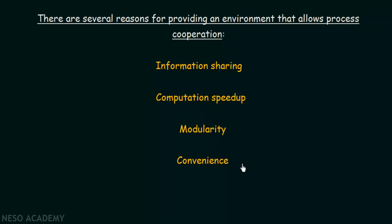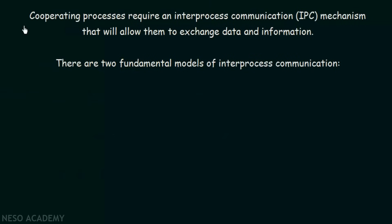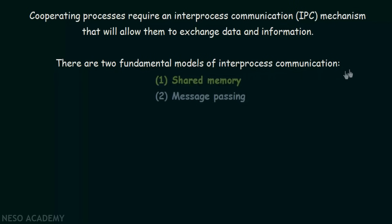Now let us see in what ways we can provide an environment that allows process cooperation, or in what ways can we let the processes communicate with each other — how does inter-process communication actually take place. Cooperating processes require an inter-process communication, abbreviated as IPC, mechanism that will allow them to exchange data and information. There are two fundamental models of inter-process communication: the first one is called shared memory and the second one is called message passing.